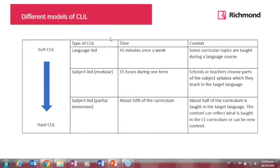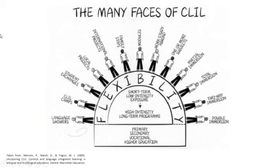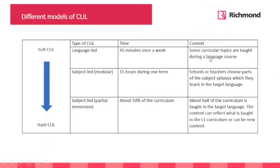In the middle you have a subject-led approach where some topics in the syllabus are taught in English. This is related to the many faces of CLIL. The book I mentioned is called 'Uncovering CLIL: Content and Language Integrated Learning in Bilingual and Multilingual Education,' published in 2009 — a very good book about CLIL. Richmond also has a good CLIL book if you're interested.